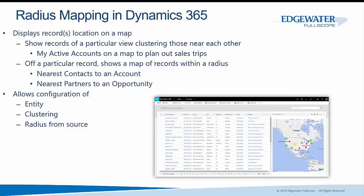Our Dynamics 365 radius mapping solution helps display records' locations on a map, and there are two main scenarios. The first shows records of a particular view, clustering those near each other. For example, my active accounts on a map can be displayed to help plan out a sales trip.